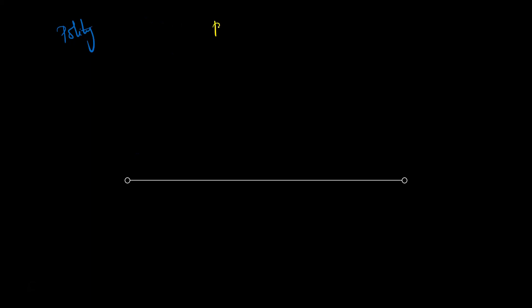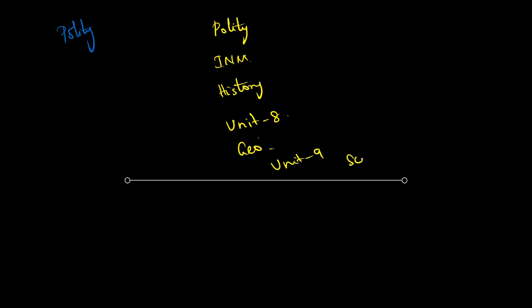The recommended order for GS preparation is: first, polity; next, Indian National Movement (INM); next, history — for INM and history, cover unit 8, with remaining topics available. Next, geography — cover unit 8 and unit 9. Then science, which is also important. Important science topics include light, sound, heat in physics; acid-base salts in chemistry; and important biology topics. In science, you can score a major quantity.